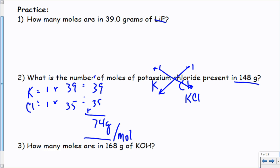148 grams divided by 74 grams per mole. Grams is gonna cancel, leave me in moles. I got 148 divided by 74 equals two moles. Beautiful, grams cancels. Now you have two to practice, number one and number three.